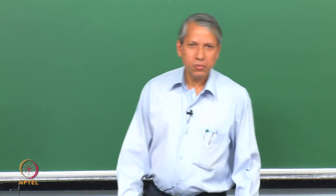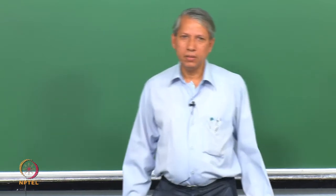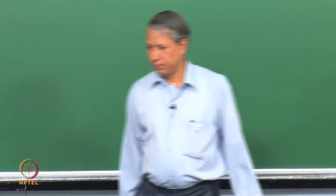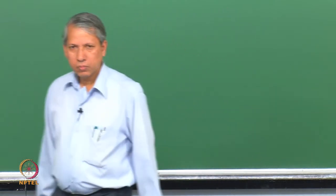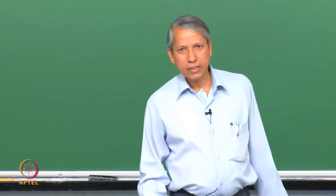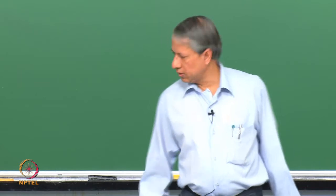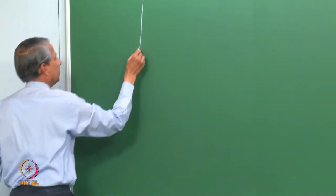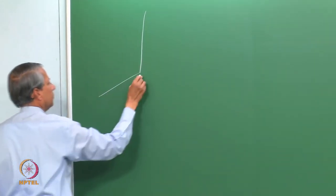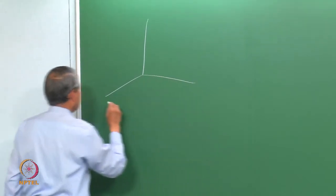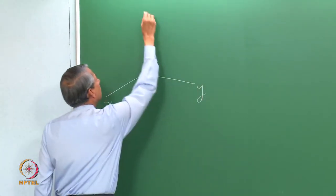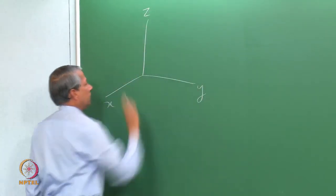How do you describe direction? We need to have a definite coordinate system. The most popular coordinate system is, of course, the Cartesian coordinate system. This is x, y, and z.